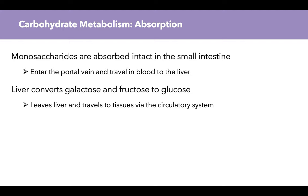For absorption, monosaccharides are absorbed intact in the small intestine. They enter the portal vein and travel in the blood to the liver. This happens for glucose, galactose, and fructose. Once galactose and fructose reach the liver, the liver converts them to glucose. The glucose then leaves the liver and travels to tissues throughout the body via the circulatory system. At this point, our monosaccharides have been transformed into glucose, the currency of the cells.